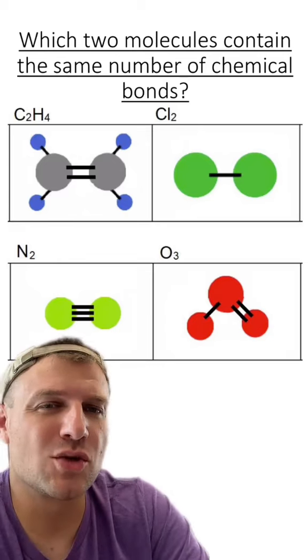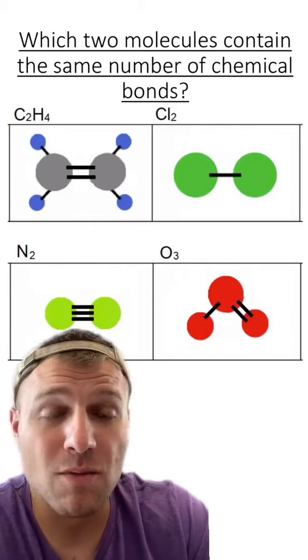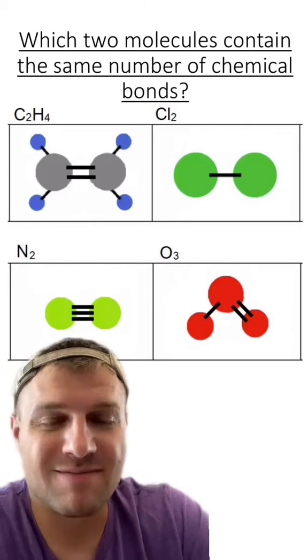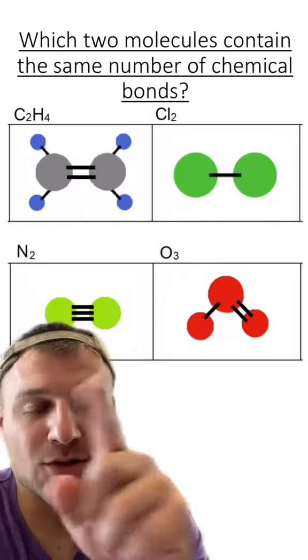Alright, last question. Which two molecules contain the same number of chemical bonds? Look for two molecules that have the same number of these. The answer is N2 and O3. They both technically have three chemical bonds between all of the atoms.